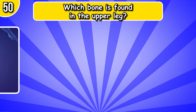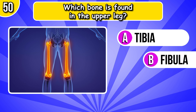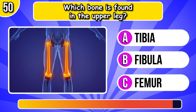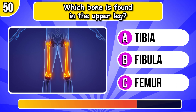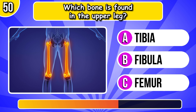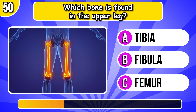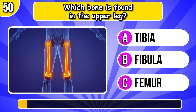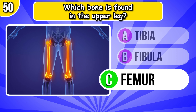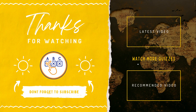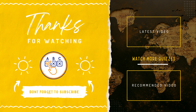Which bone is found in the upper leg? It's femur. How many correct answers did you get? Let me know in the comments, and see you in the next video.